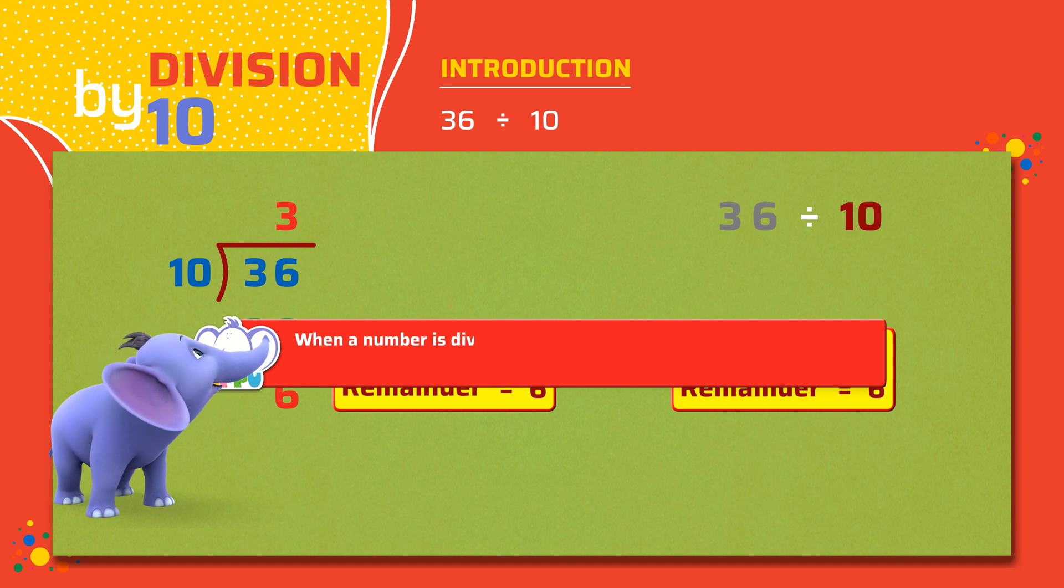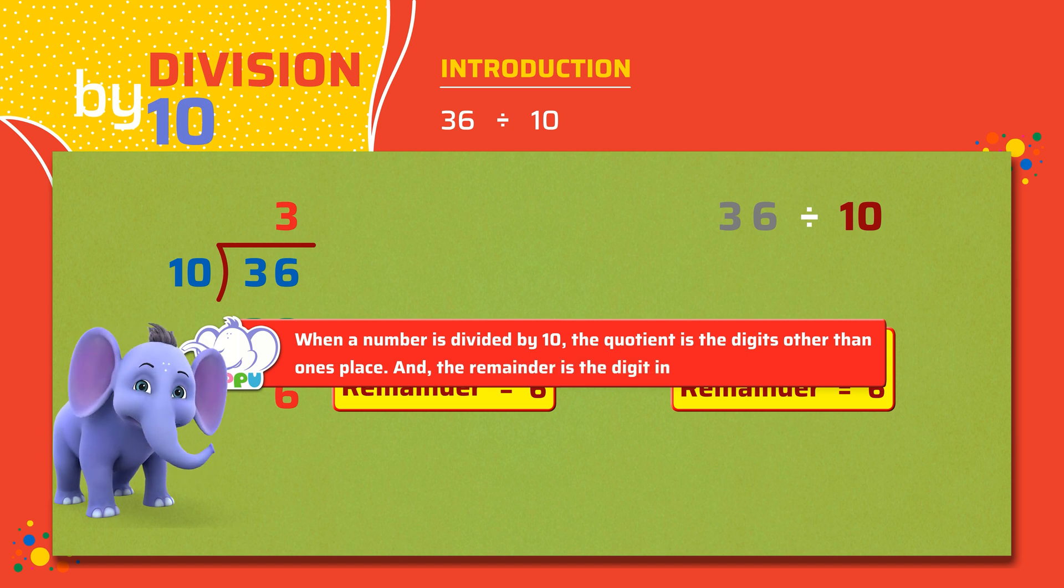When a number is divided by 10, the quotient is the digits other than the ones place. And the remainder is the digit in the ones place.